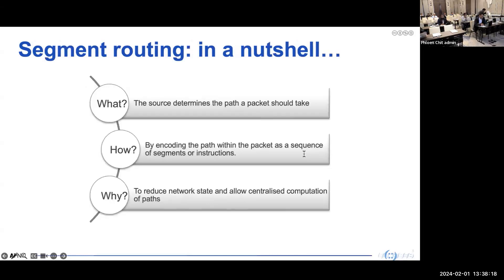To be short and to the point, segment routing is a method of forwarding packets based on source routing, where the routing path is encoded in the packet header as an ordered list of segments. As a result, intermediate nodes do not need to keep network state. It also allows centralized computation of the path through an SDN controller or other tools.